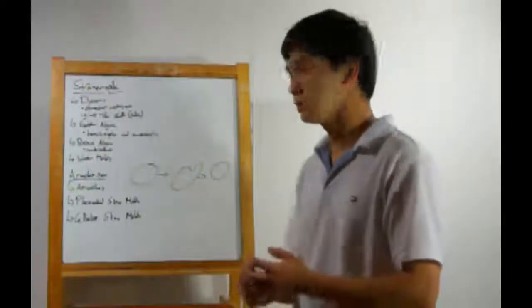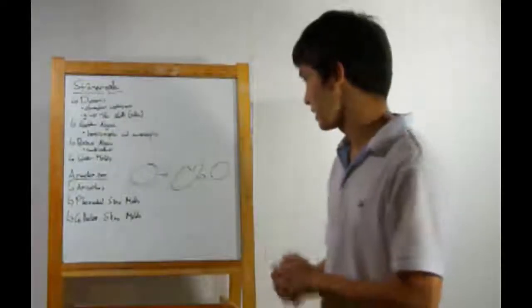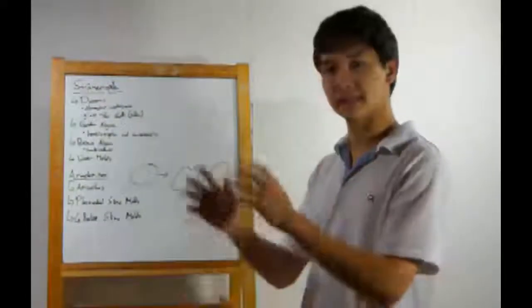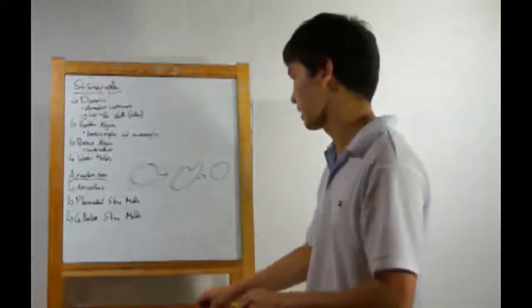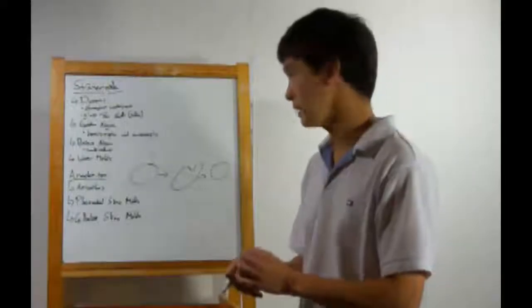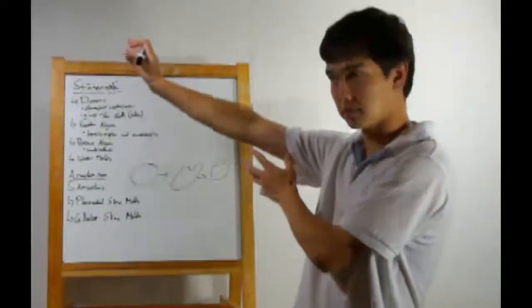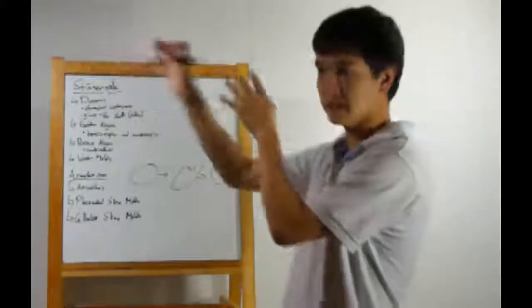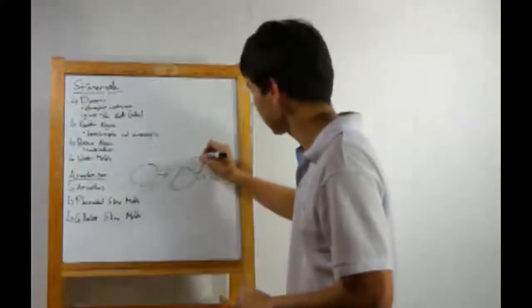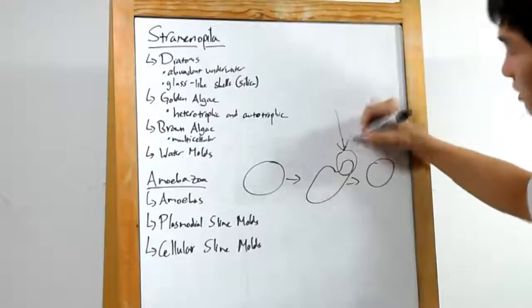Next up, amoebazoa. Shockingly, amoebas are in here. Now, the big thing you need to know about amoebas is how they move, and that's by creating a pseudopod. So let's pretend amoebas are almost perfectly round. What will happen is they'll create an extension of the cell, cytoplasmic with cell membrane surrounding it, a thing like this, a pseudopod, if you will.